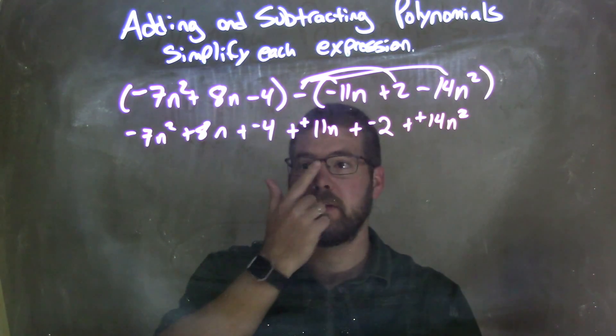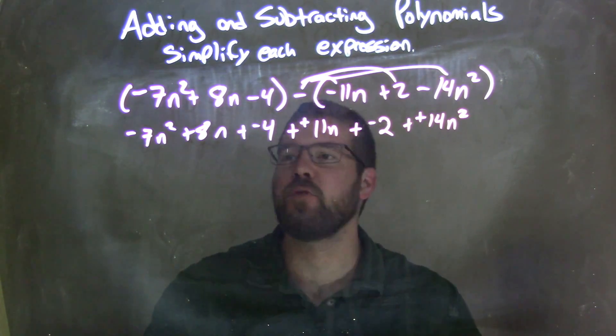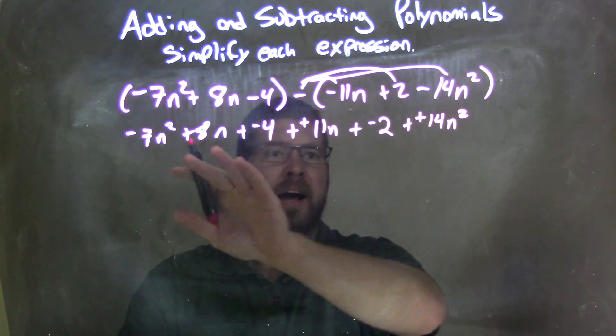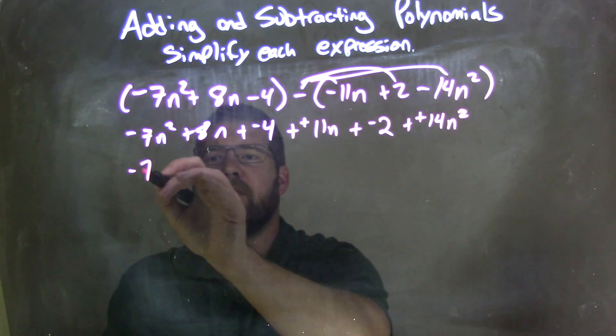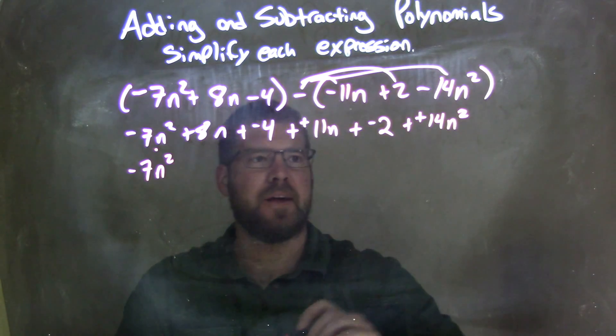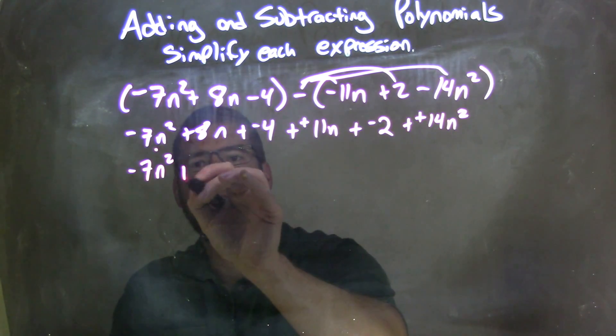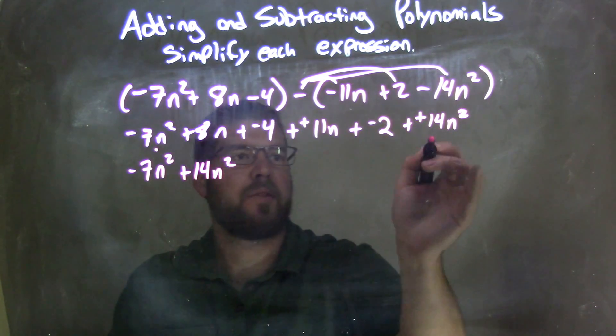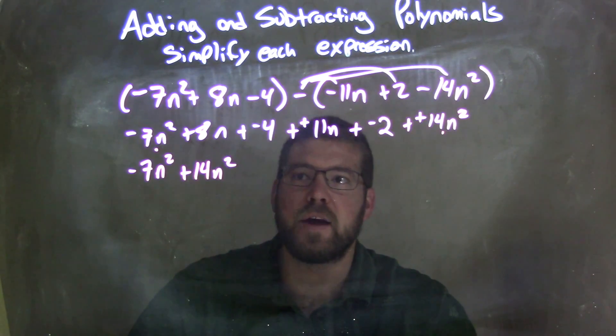Then from there, I'm going to rewrite this and have my like terms together with my highest degrees first. Highest degree I see is the second power. So we have negative 7n squared, brought that down, plus 14n squared. I don't see anything else in the second power.